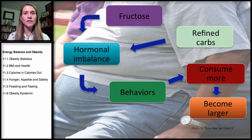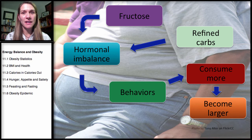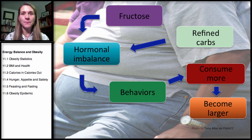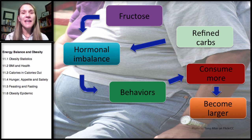Fructose has an independent effect separate from starch-based refined carbohydrates. Whether it comes from honey, organic cane sugar, high-fructose corn syrup, or sucrose, a large dose of fructose goes directly to the liver. Our body doesn't really need fructose — we need glucose. Cells can't use fructose the way they use glucose, so fructose goes right to the liver.